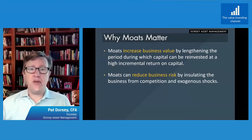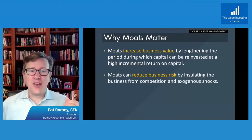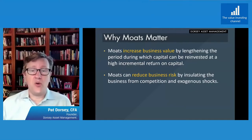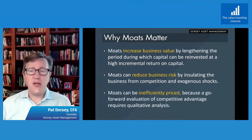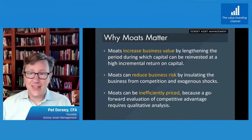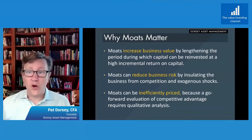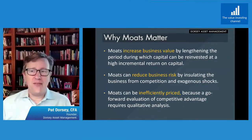This is really important in the context of a concentrated portfolio. If your average position is seven or eight percent and a big position is 12%, unexpected shocks can really hurt you. Having the business insulated from competition and unexpected shocks — not completely insulated, but that risk reduced — is very beneficial. That's one reason we focus on moats. Finally, moats can be inefficiently priced because a go-forward evaluation of competitive advantage requires qualitative analysis. You can't just screen for switching costs on Bloomberg — you have to get out there and talk to people. If you do that work, you have the opportunity to develop a variant perception.